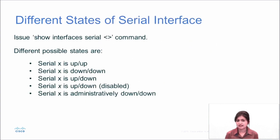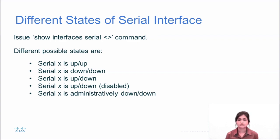We can identify different serial interface statuses by issuing the command 'show interface serial'. We can see if the serial interface is up, down, up/down, disabled, or administratively down/down — there could be many things. If you see your serial interface is up, this is the perfect scenario and no troubleshooting is needed. In case you see any other status, we need to troubleshoot and identify the problem.